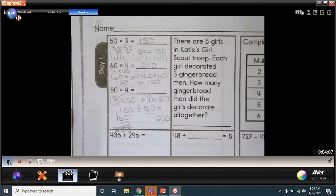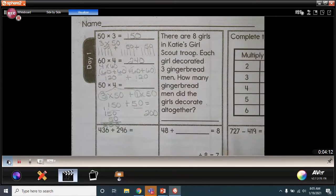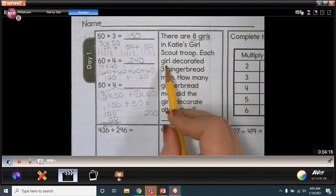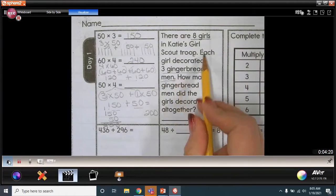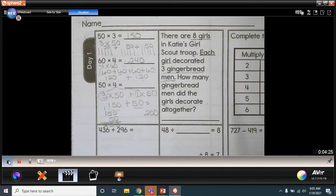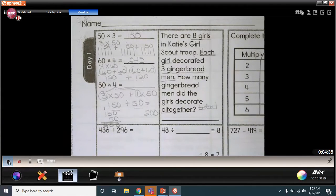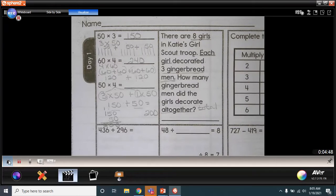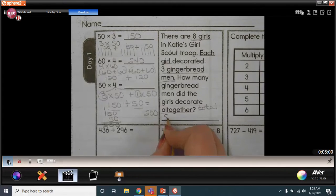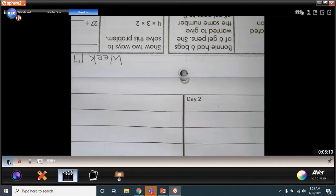Let's take a look at our word problem. It says there are eight girls in Katie's Girl Scout troop. So these are our groups. And it says each girl decorated three gingerbread men. Each girl, that means each group has three gingerbread men. Now the question asks us, how many gingerbread men did the girls decorate all together? So all together means they want a total number. And if we're looking for a total number in our question, we're either using addition or multiplication. Now multiplication, remember, is having the same amount of objects in each group. And since each girl decorated three gingerbread men, we know that it's going to be a multiplication problem.